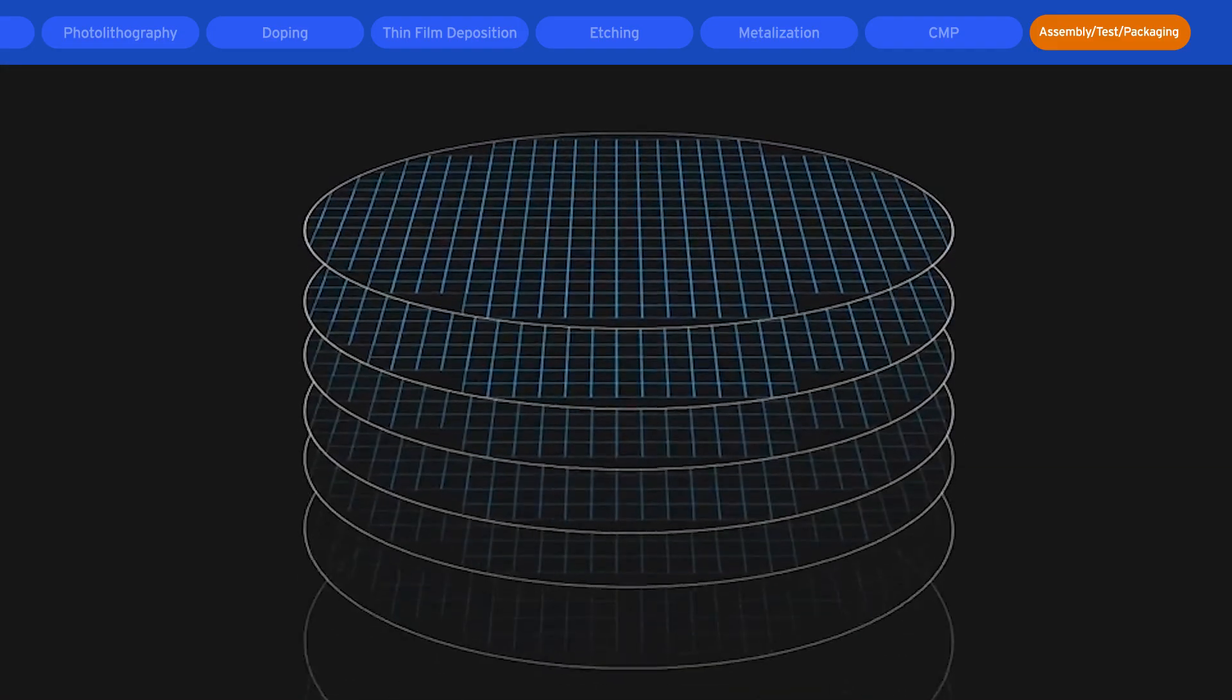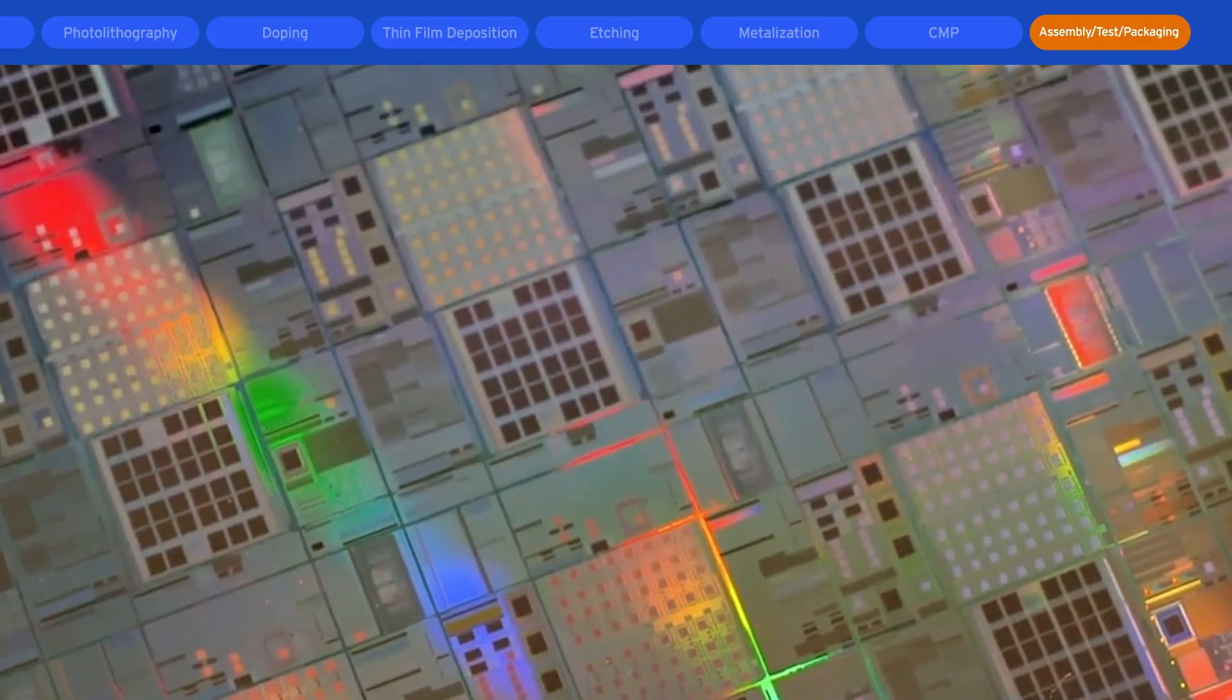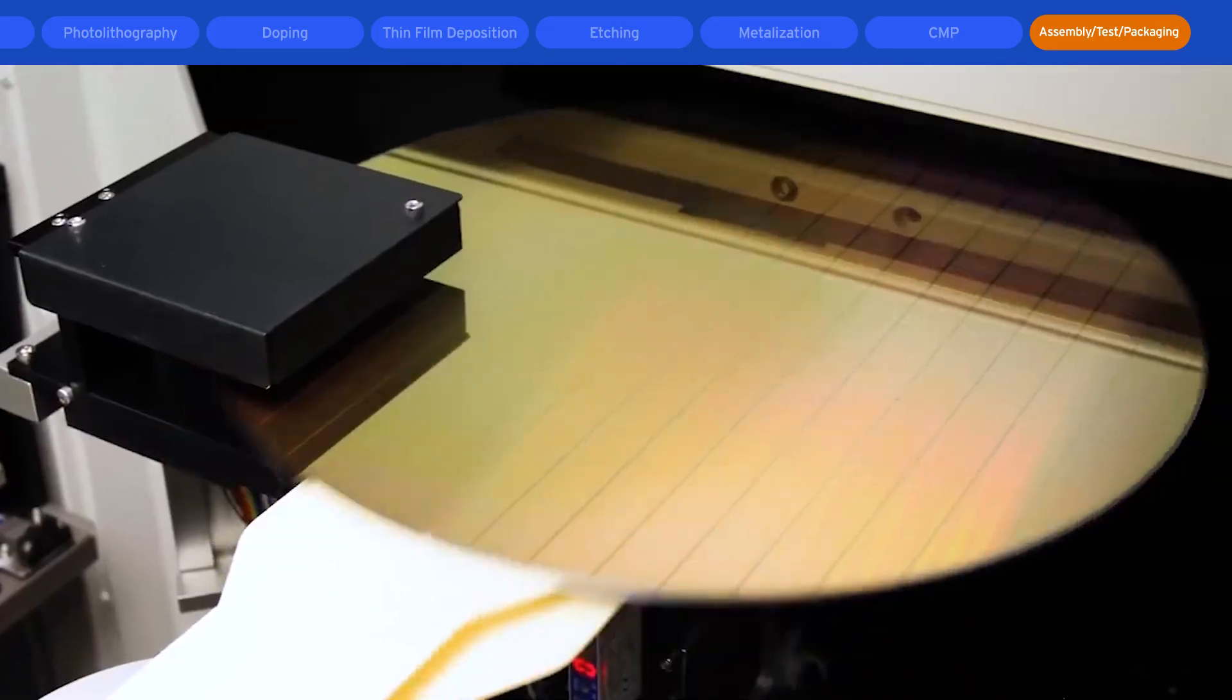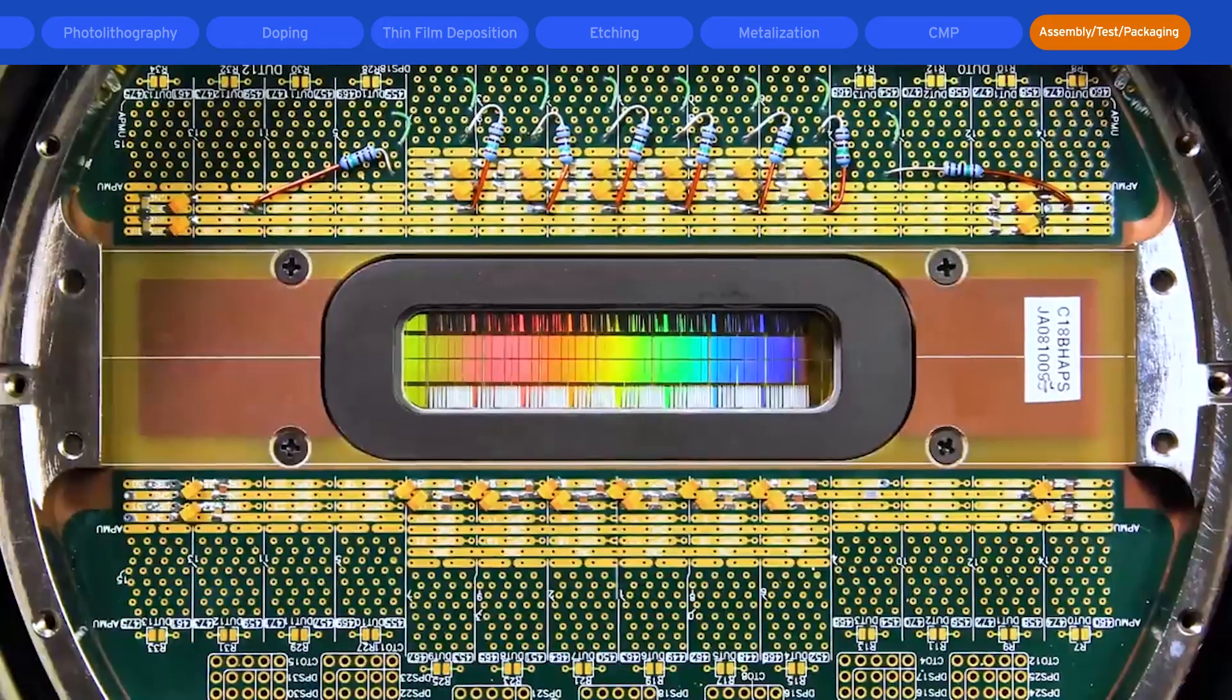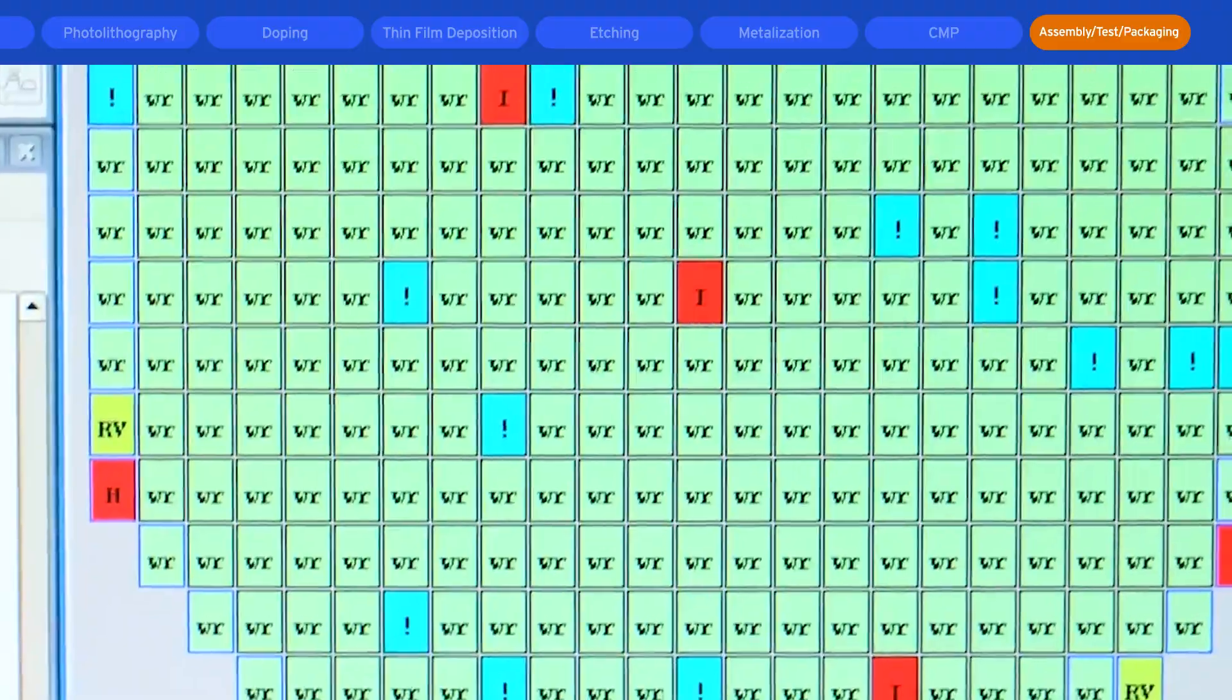Each wafer contains many individual devices called die. A single wafer typically holds tens to tens of thousands of them. Upon completion of processing, each die on the wafer is electrically tested for functionality via a probing process.